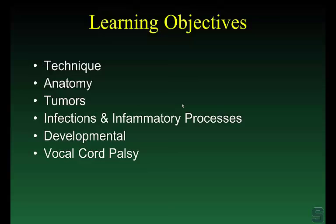In summary, over the last 45 minutes we talked about technique, anatomy — remember your homework: look at the normal cartilages and bones of the larynx for five minutes every evening over the next two weeks — tumors, infectious and inflammatory processes, developmental lesions, and vocal cord palsies. Thank you very much for your attention.